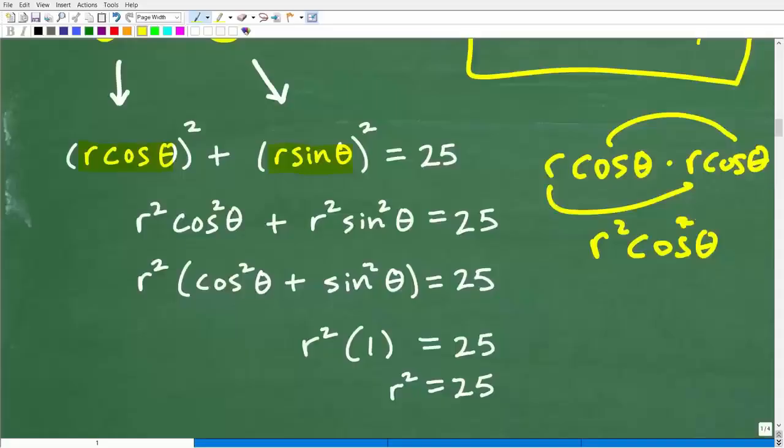All right. So hopefully this makes sense. So we have r squared cosine squared theta plus r squared sine squared theta is equal to 25. Okay. So hopefully you're with me.